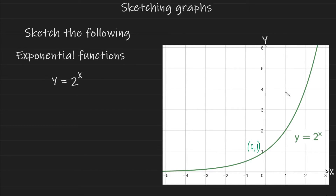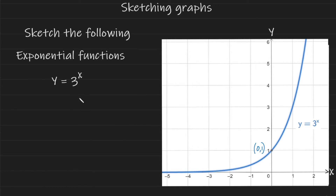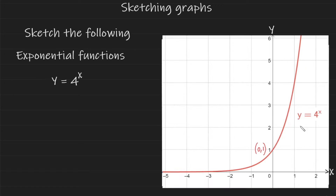Now let's see what happens when we change the base number to a larger value. y equals 3 to the power of x looks nearly identical to y equals 2 to the power of x — it intercepts the y-axis at the same point, never touches the x-axis, and has the same increasing characteristic. Similarly, y equals 4 to the power of x is again very similar, intercepting the y-axis at 1.